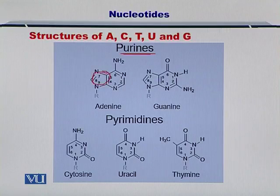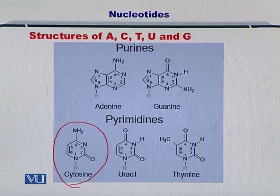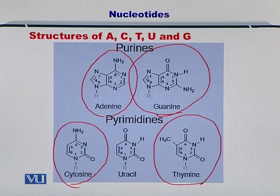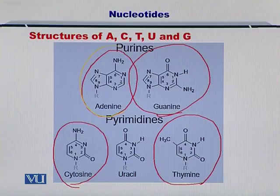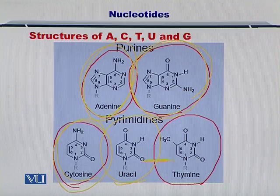The purines have 2 rings while the pyrimidines have a single one. Moreover, in case of the DNA you only have cytosine, adenine, guanine and thymine, while in case of RNA you have adenine, guanine, uracil and cytosine. So, in this way the RNA and DNA differ between uracil and thymine.